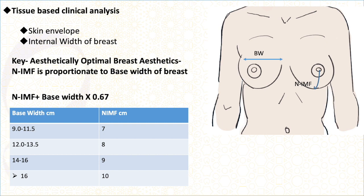We also have to consider your tissue, the skin envelope, breast diameter, breast width, and the elasticity of the breast tissue. The key to an aesthetically optimal breast is that the distance between the nipple and the inframammary fold should be proportionate to the width of the breast. A standard ratio is that this distance multiplied by 0.67 gives an ideal breast shape. For example, a breast width of 9 to 11.5 cm should have a nipple-to-IMF distance of 7; 12 to 13.5 cm should be 8; and more than 16 cm should be 10. As the nipple-to-IMF distance increases, the breast becomes more saggy.